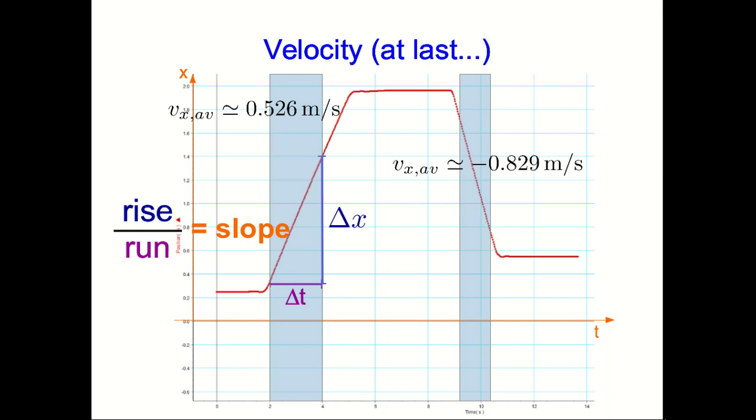Well, having realized that, what we see is that the slope of the x versus t graph, the x component of position versus time graph, is the x component of the velocity.